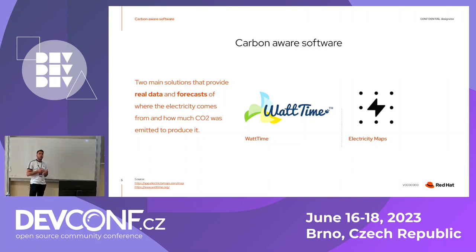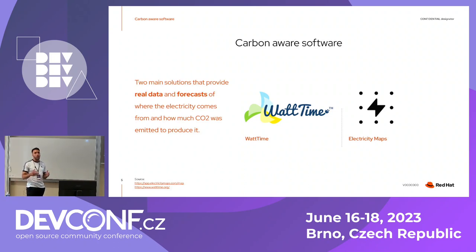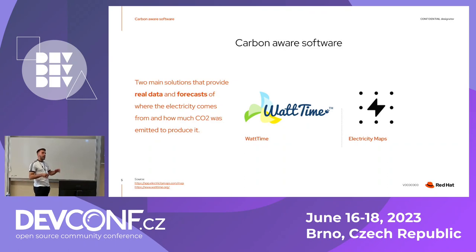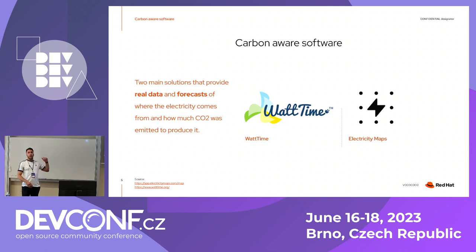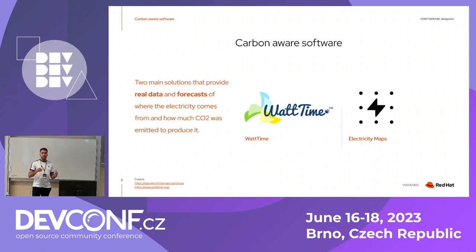If we want our software to be aware of carbon emissions, we need to start thinking about real data emissions and, probably most importantly, forecasts. Keeping in mind the carbon intensity of electricity, already measured in grams of carbon dioxide per kilowatt hour, in order to run something like stress testing that usually consumes a high amount of energy. If it also keeps the possibility to run things at different locations, the real data emissions or the forecast can be checked depending on the source selected.